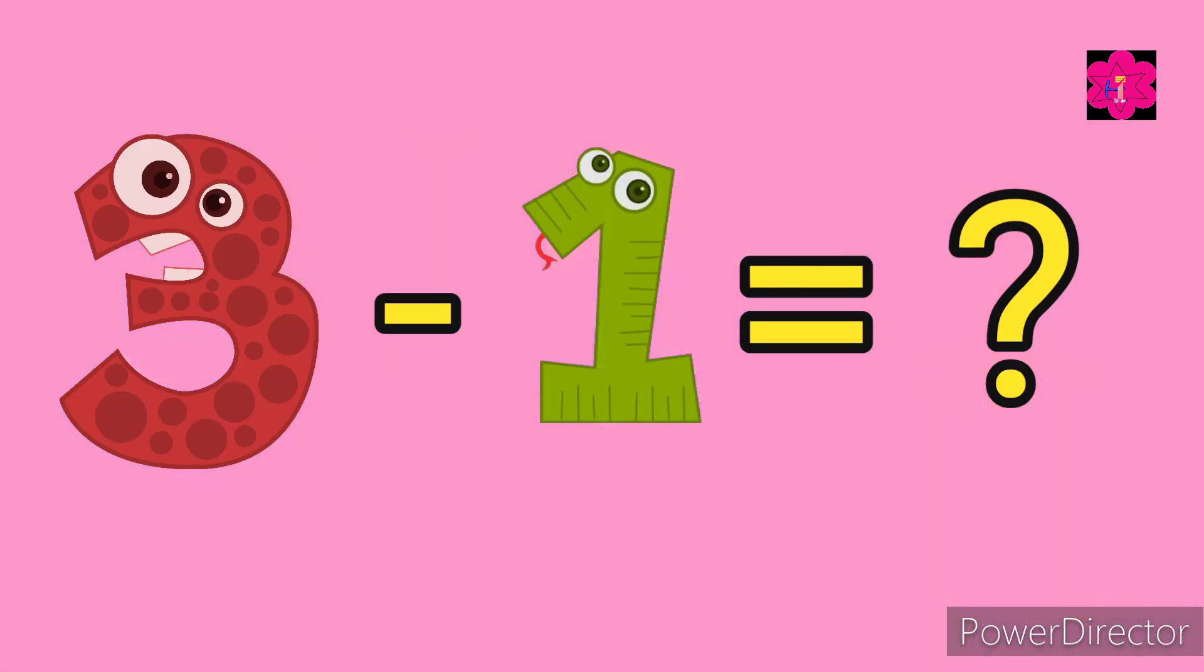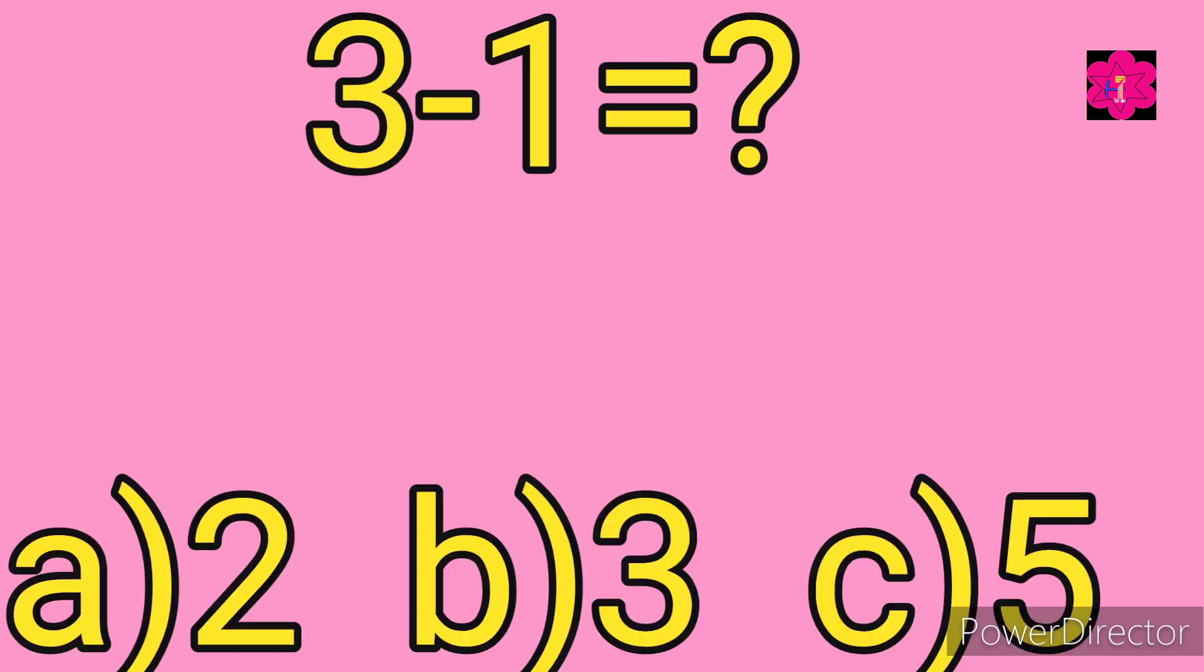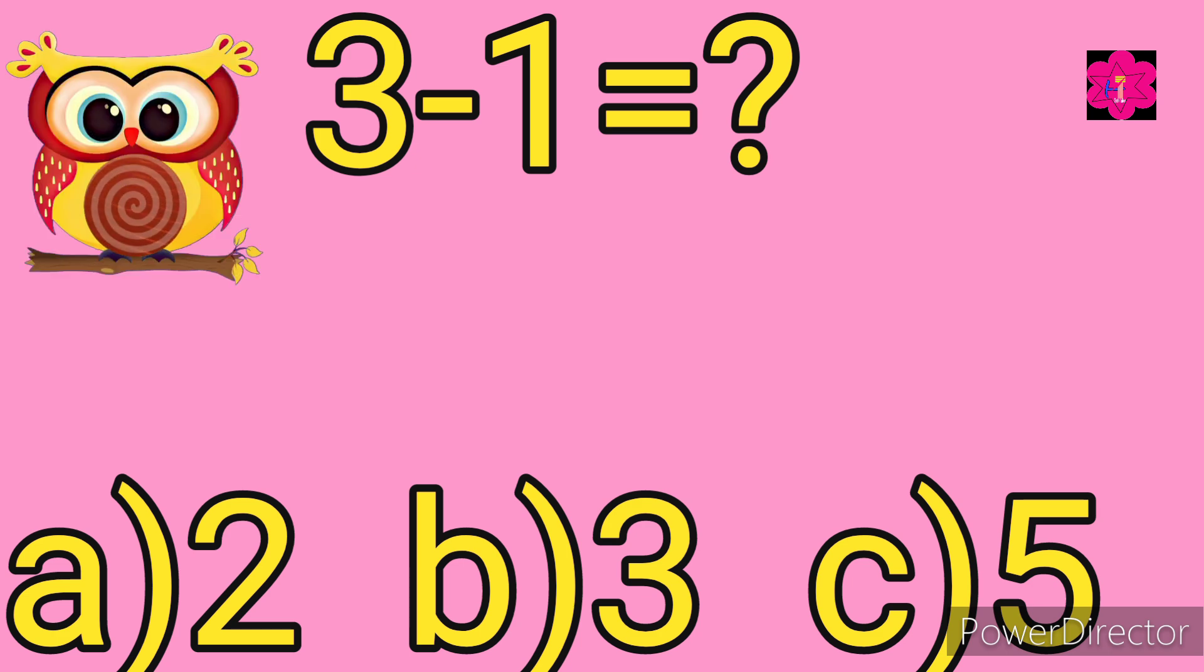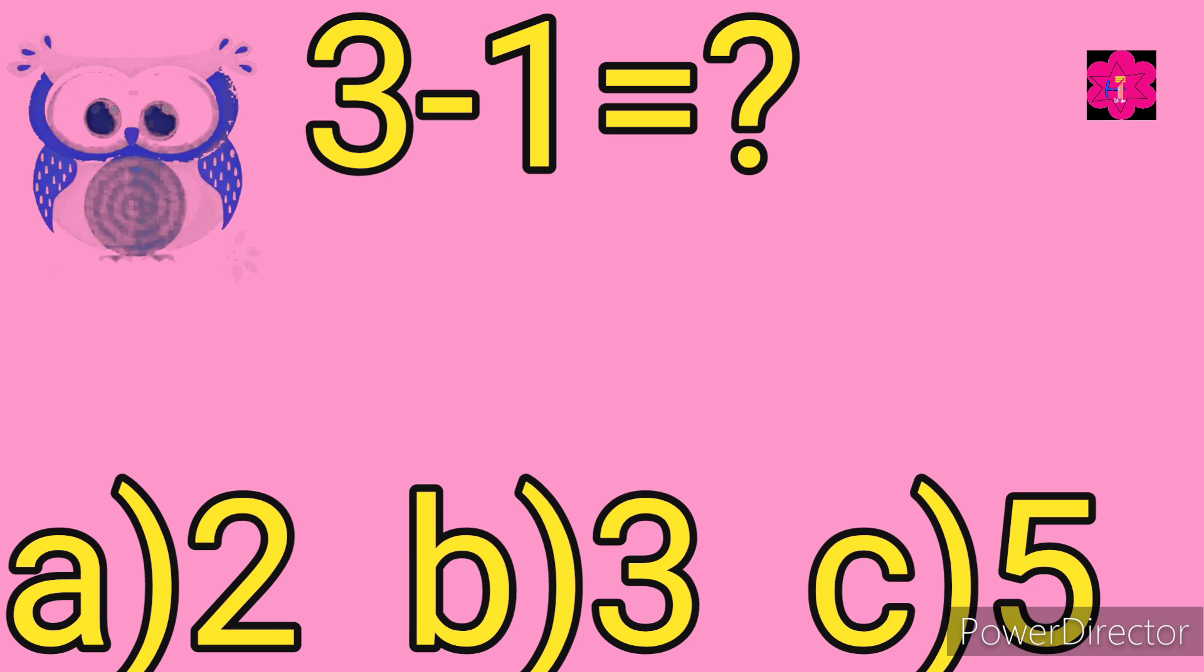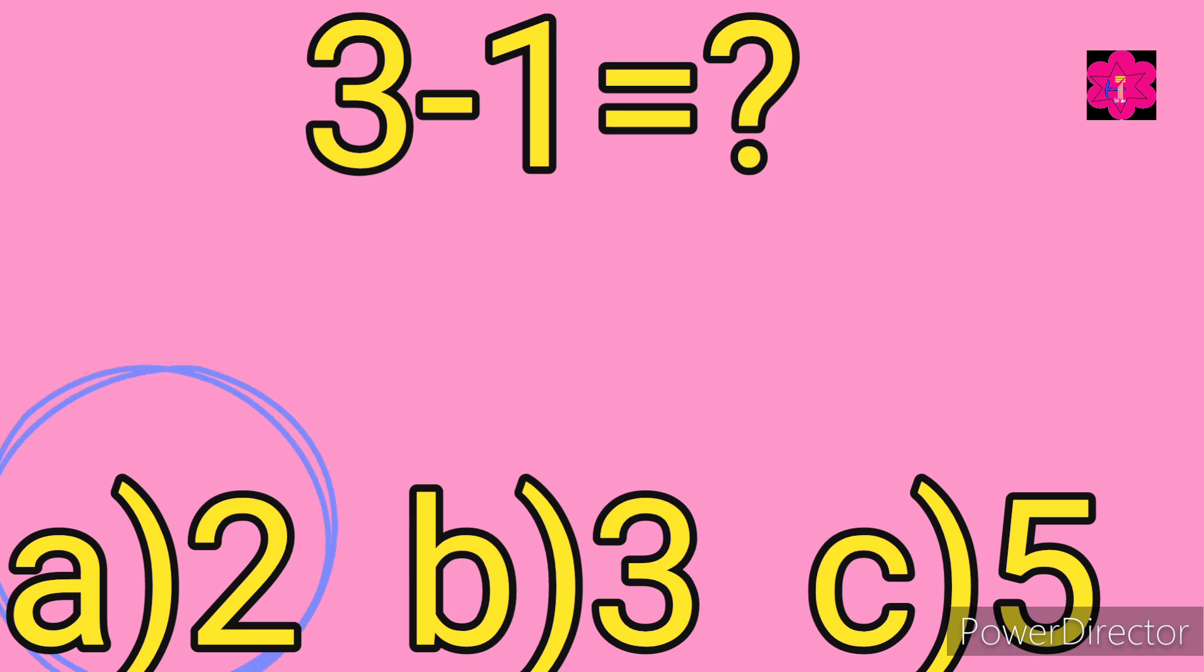What is 3 minus 1? Your options are a) 2, b) 3, and c) 5. Yes, correct answer is a) 2. 3 minus 1 is equal to 2.